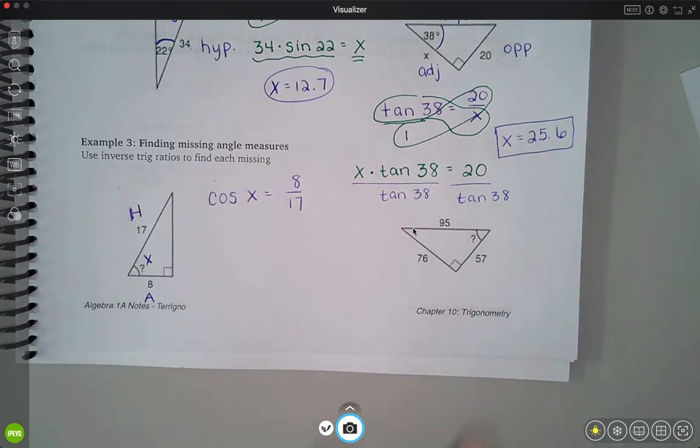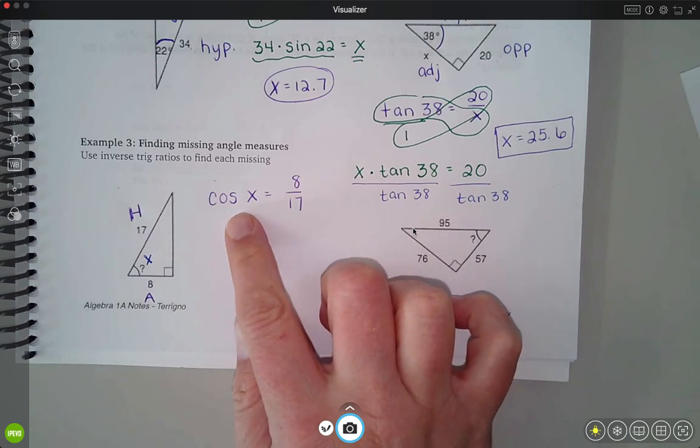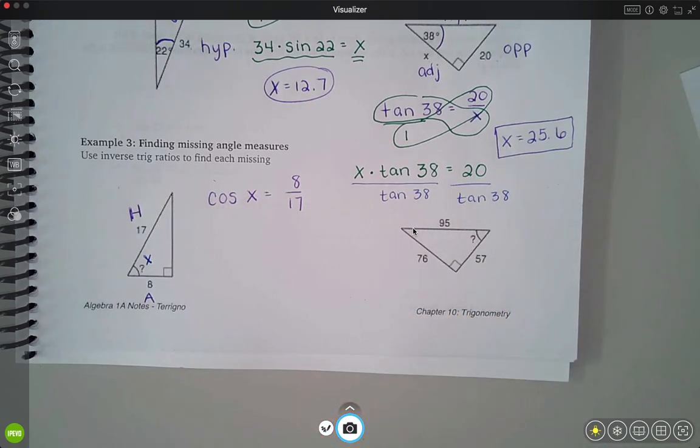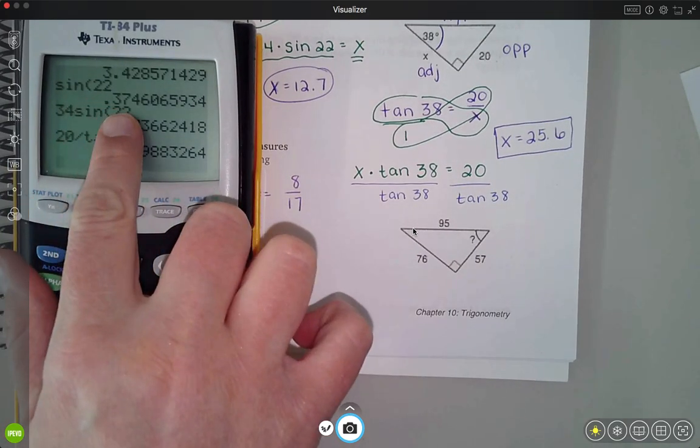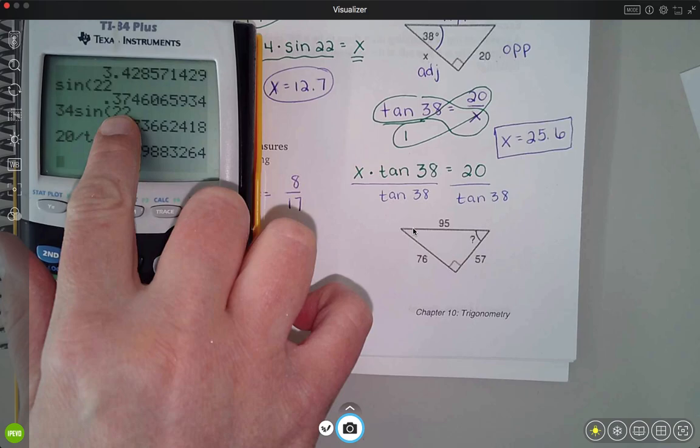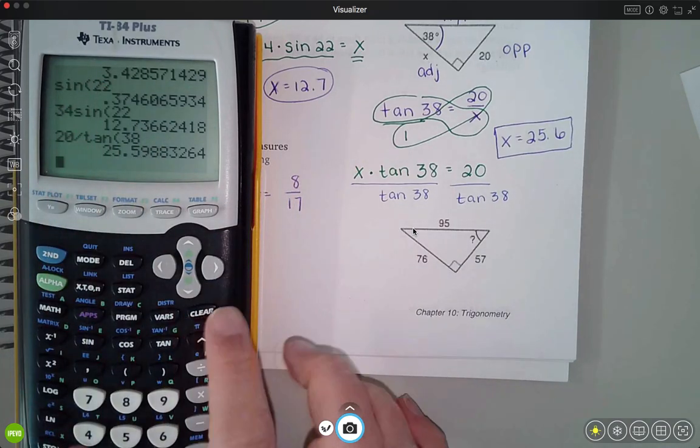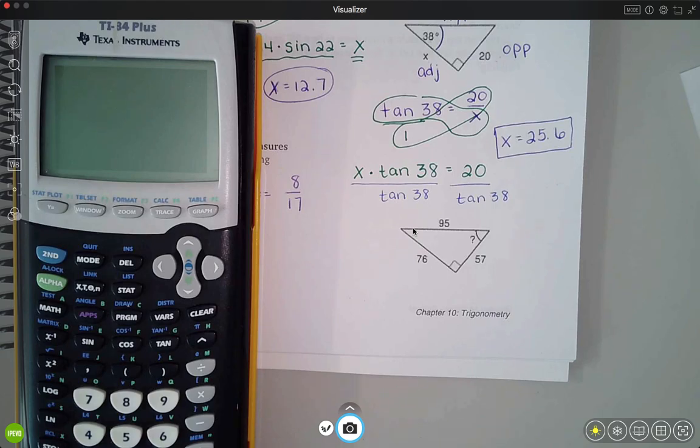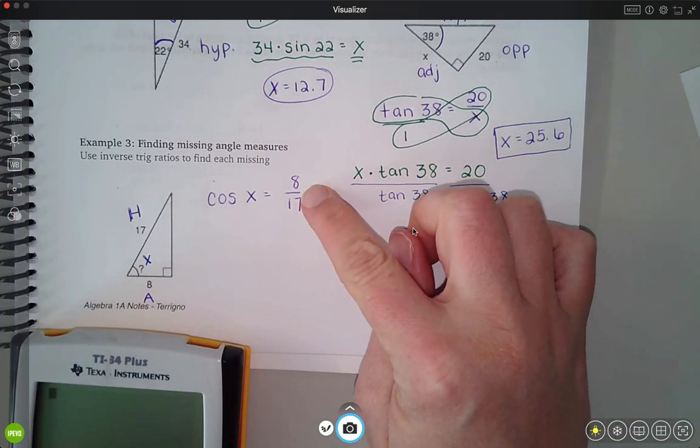So now I know the ratio of sides, I just don't know which angle that goes along with. And remember we talked about sine 22, that's saying this is the ratio every single time the angle is 22 degrees.